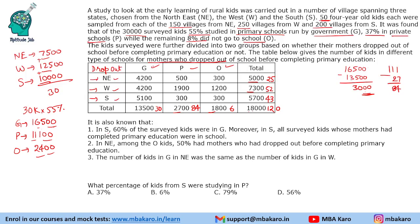The first clue says that in S, 60% of the surveyed kids were in G. How many students were surveyed in S? 10,000. So out of them, 6,000 are in G. This is already 5,100 in the dropout table, so we will have 900 in the second category (completing education).